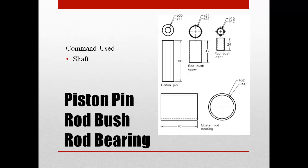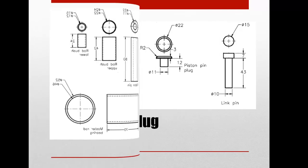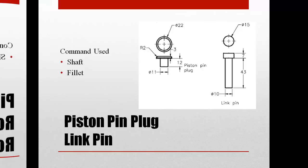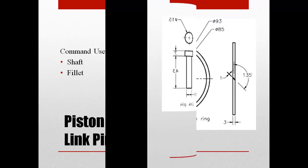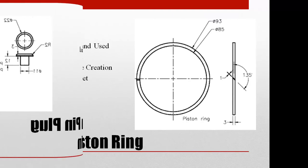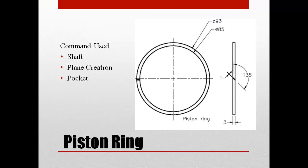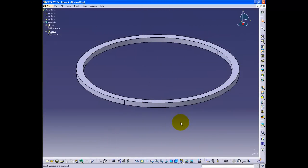The piston pin, rod bush, bearing, piston pin plug, and link pin can all be made using the shaft command. This video will be skipping these parts since they can be created easily. Next, the piston ring will be made. The ring can be created in the same way as the piston pin, but the video will show the method of creating a gap in the piston ring.